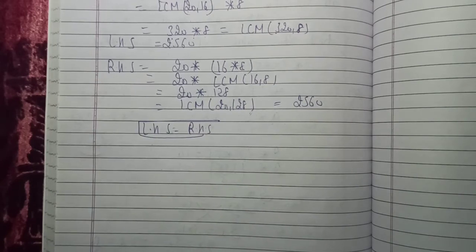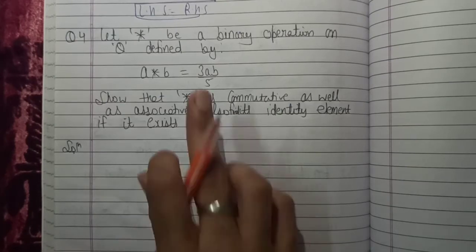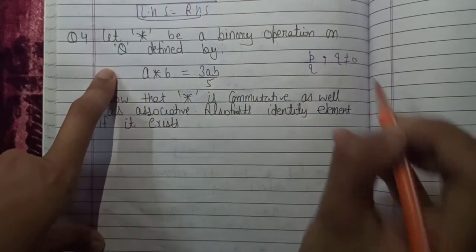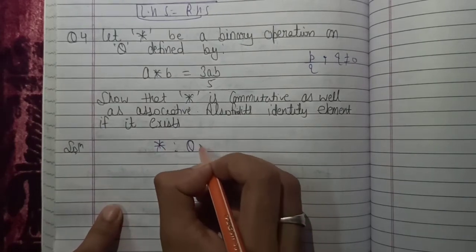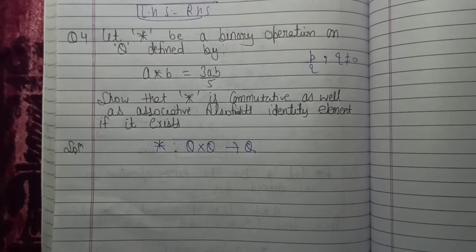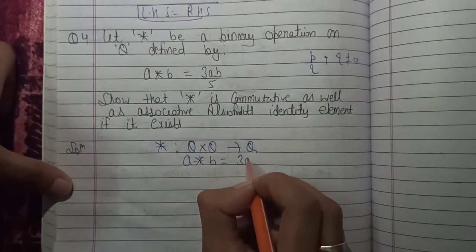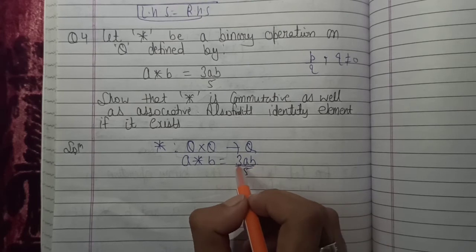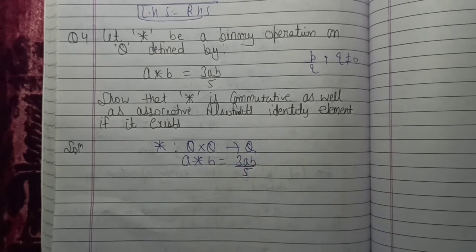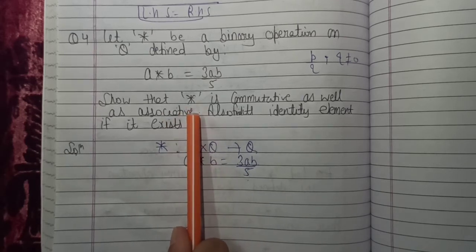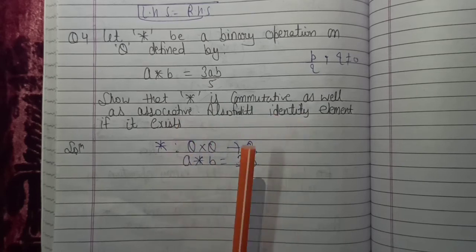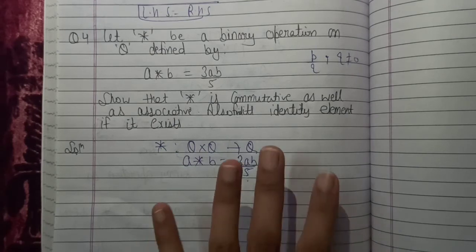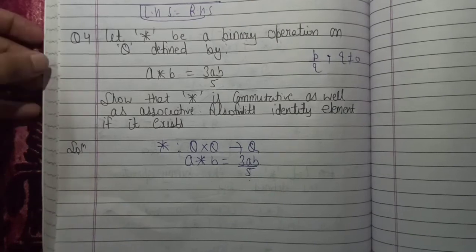Now the last question: binary operation on Q, the set of rational numbers, where Q is p over q with q not equal to zero. The star operation is defined as a star b equals 3ab over 5. We need to prove: commutative property, associative property, and find the identity element.